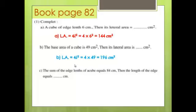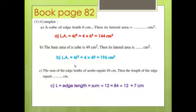Question 1C: The sum of all edge lengths of a cube is 84 cm. Find the length of one edge. L = 84 ÷ 12 = 7 cm.